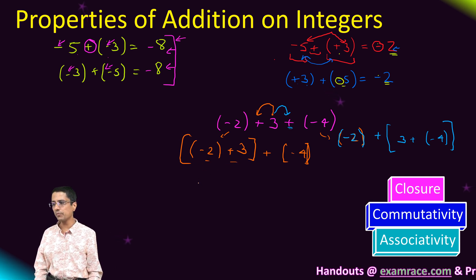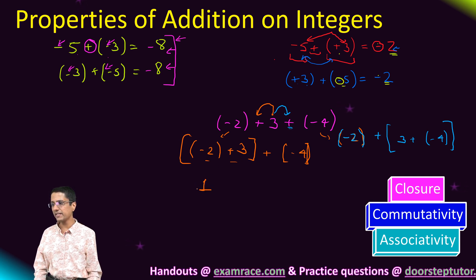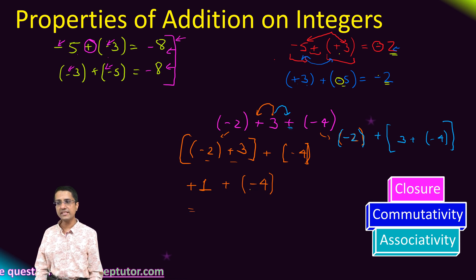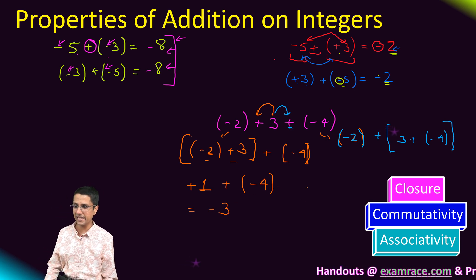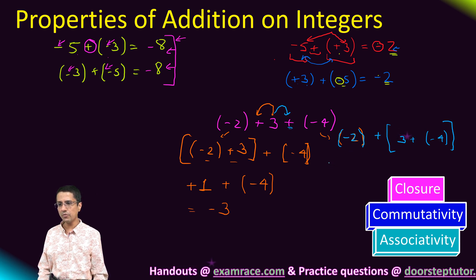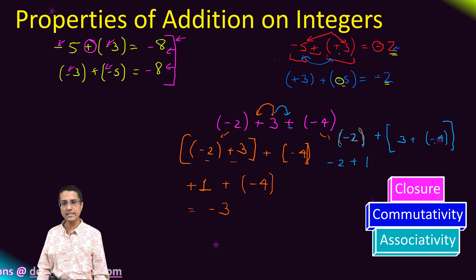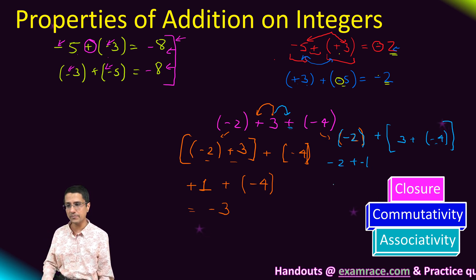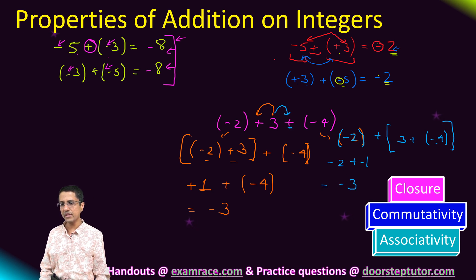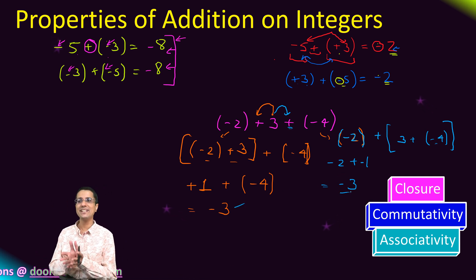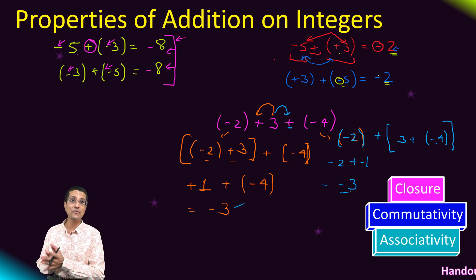In the first case: minus 2 plus 3 — signs are different, take the difference, use the sign of the larger magnitude, giving plus 1 — then plus 1 plus minus 4 — signs are different, take the difference, that is 3, and the larger magnitude operand is 4, so the answer is minus 3. In the second case: minus 2 stays, then 3 plus minus 4 — signs are different, difference is 1, sign is minus — giving minus 2 plus minus 1; signs are the same, so add them, giving minus 3. The answer does not change.